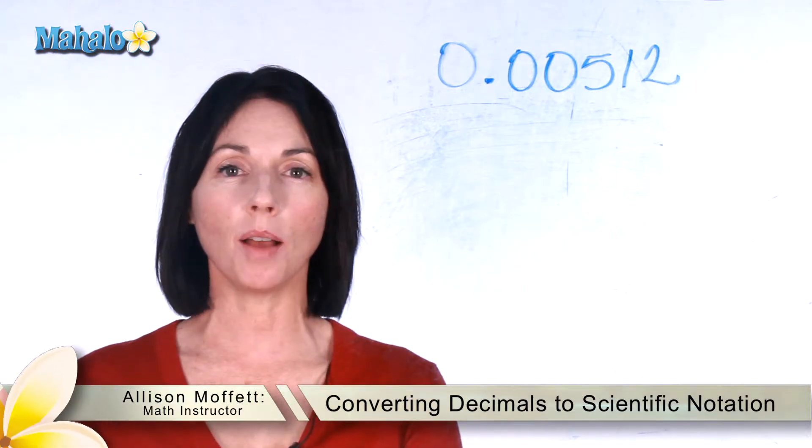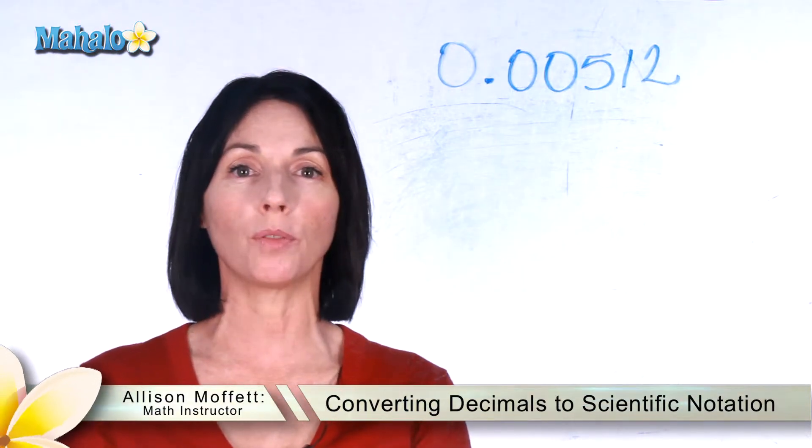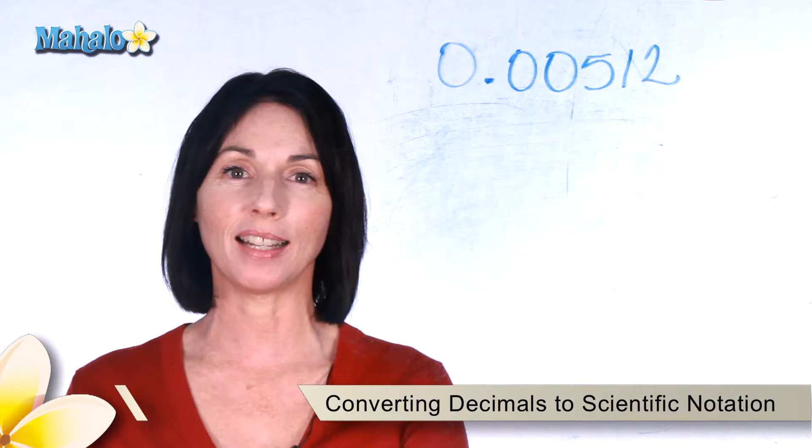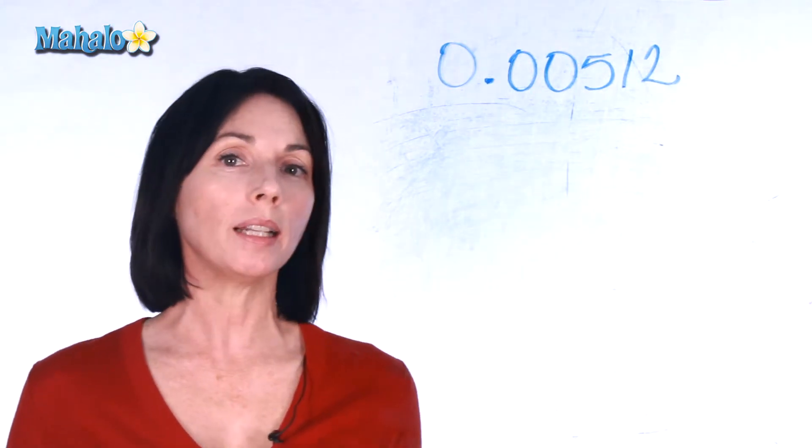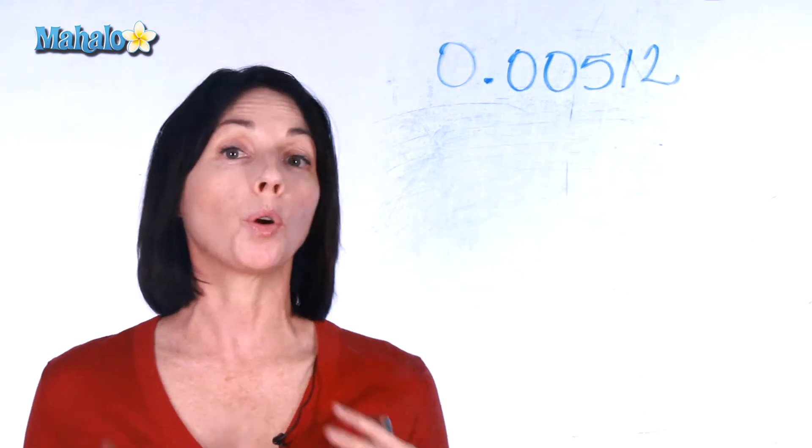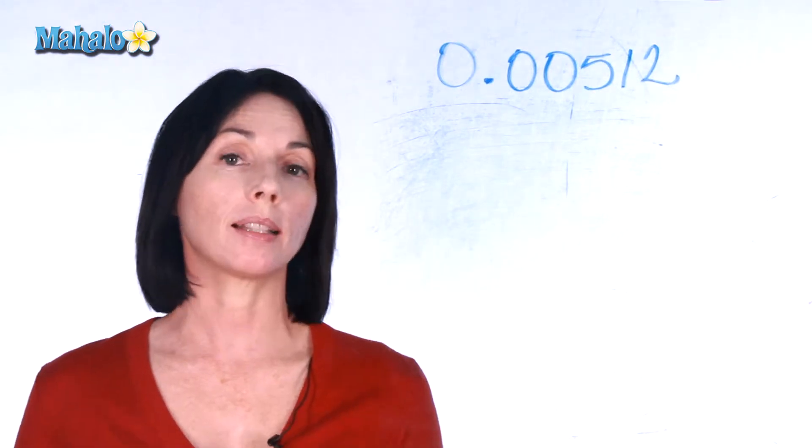Hi, it's Allison from Mahalo.com and we're going to do another example of writing a decimal in scientific notation. So here's our decimal here. Don't forget, to write in scientific notation we want to get a number greater than or equal to 1 but less than 10.